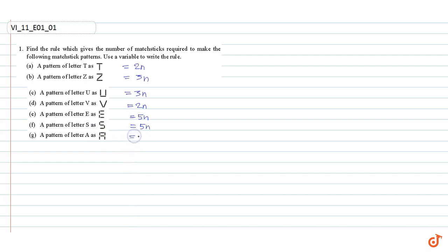It takes six matchsticks to make A, so the rule is 6n. These are our answers.